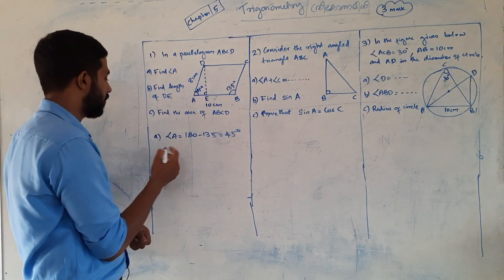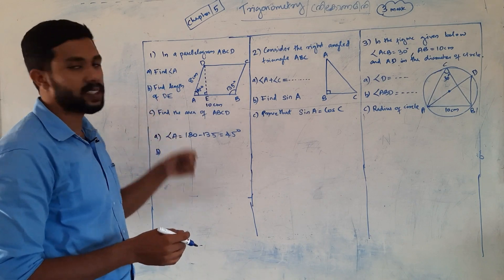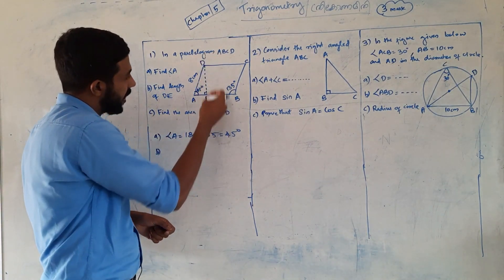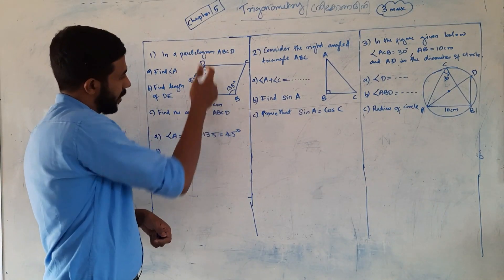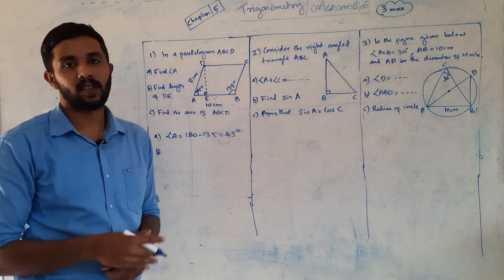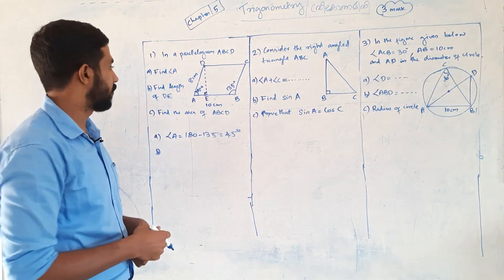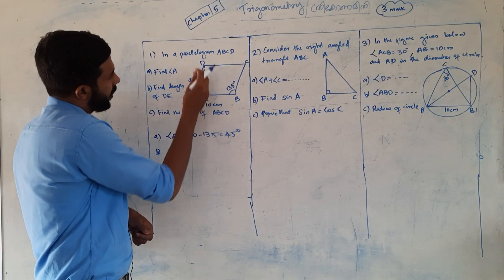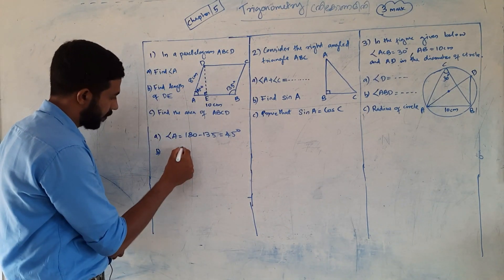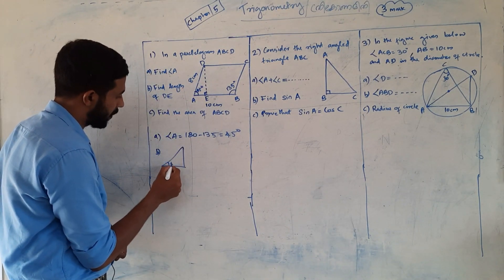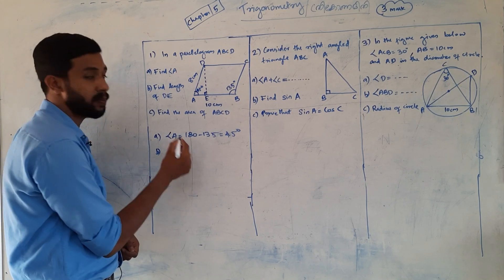The first question is very easy. Now find the length of DE — DE is perpendicular. The length of DE, that angle is 90 degrees. DE works between the sides. When we look at the length of DE, I will find the length of DE. This one is 45 degrees.